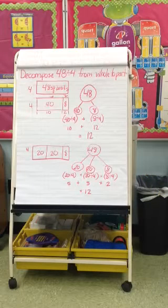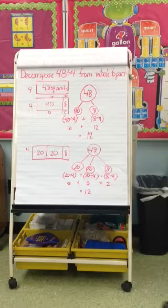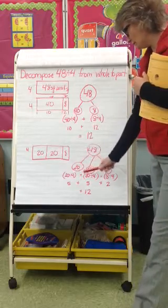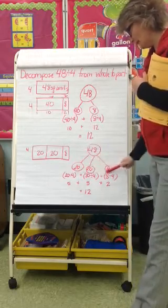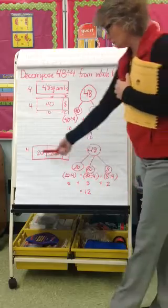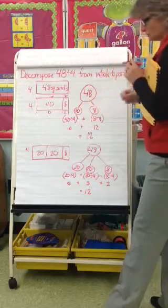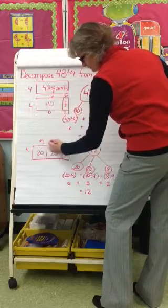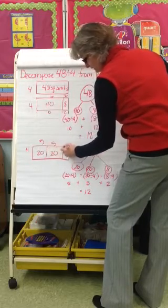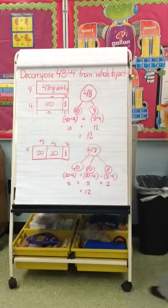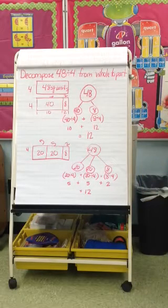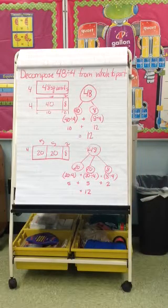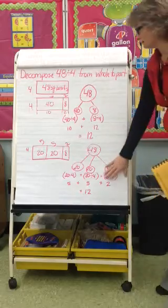Now you could have done a different number bond for 48. You could have done 20, 20, and 8. That still gives us 48. So what we would do here is we would take 20 divided by 4 is 5. 20 divided by 4 is 5. 8 divided by 4 is 2. 5 plus 5 plus 2 is 12. You're still getting the same answer regardless of what your number bond is.